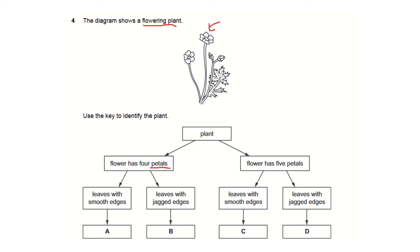So first we have two options: four petals or five petals. We count one, two, three, four, five, which means that we are now in this section here of the key.